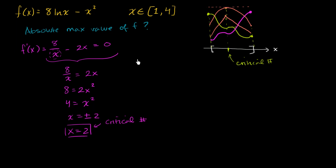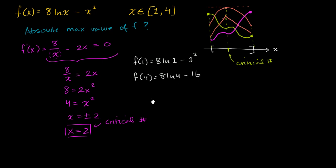Now we just have to test f at the different endpoints and at the critical number. We're going to test f of 1, which equals 8 times the natural log of 1 minus 1 squared; f of 4, which equals 8 times the natural log of 4 minus 4 squared, which is 16; and f of 2, which equals 8 times the natural log of 2 minus 2 squared. These are the two endpoints and the critical number.